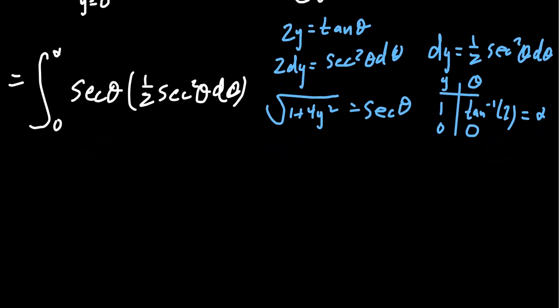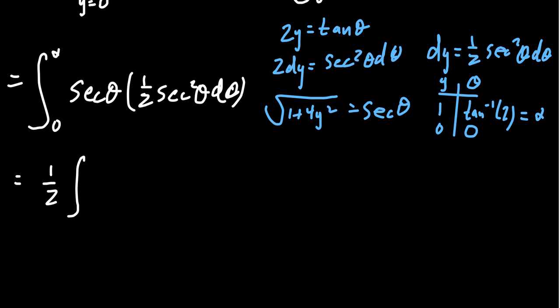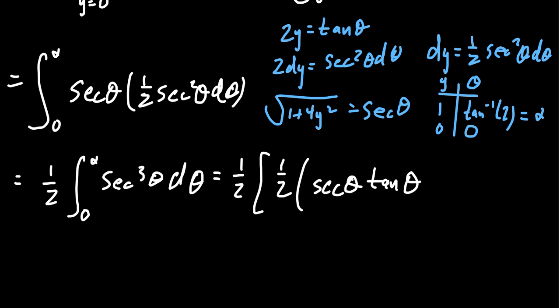So notice what our integral has now become. This thing is now 1 half, the integral from 0 to alpha of secant cube theta d theta. And so we can proceed to compute this antiderivative like we've done with our trigonometric integrals in the past. Secant cube might look a little bit familiar to you, because we actually did do this one in a video previously. It was actually somewhat of a doozy. We're not going to do it again. But we're just going to use the conclusion we had from that previous calculation. That the antiderivative of secant cubed is going to be 1 half times secant theta tangent theta plus the natural log of the absolute value of secant theta plus tangent theta.